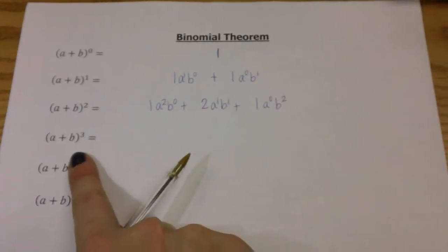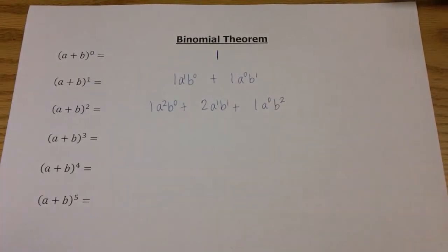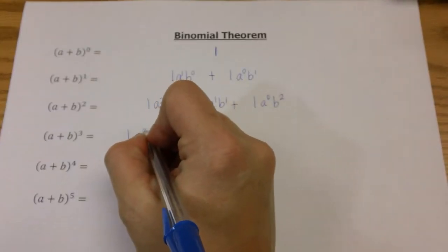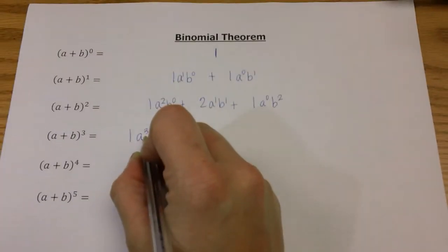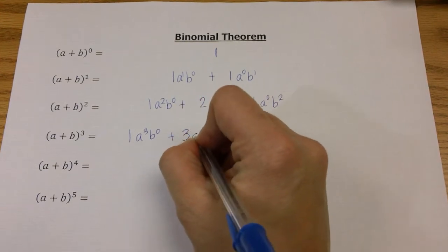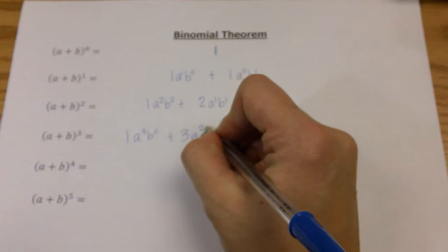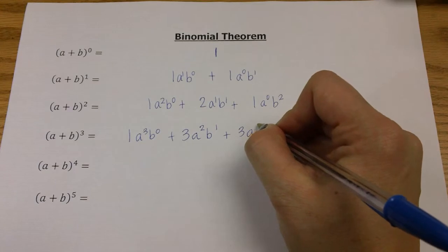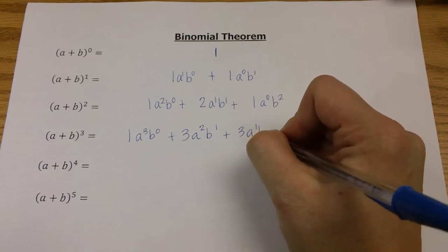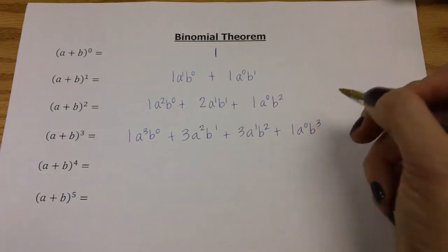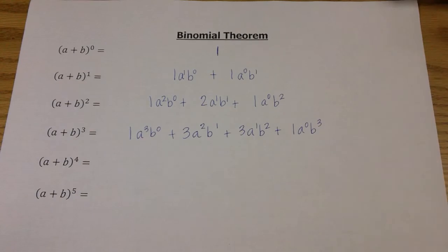For the next one, we have a plus b to the third power. If we follow the pattern, we can see that my first term is going down and my second term is going up. This gives us one a to the third b to the zero, plus three a to the second b to the first, plus three a to the first b to the second, plus one a to the zero b to the third.